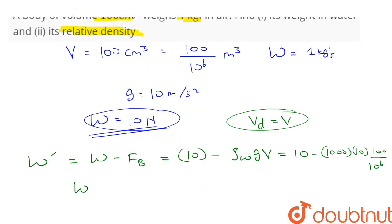Therefore we have 10 minus 1000 into 10 into 100 upon 10 to the power 6. Therefore W dash is equal to 10 minus...